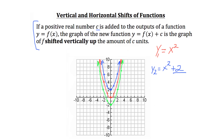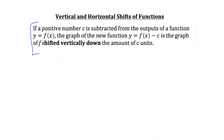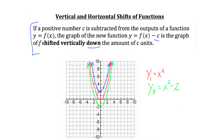Now let's take an example of shifting vertically down. If a positive number c is subtracted from the outputs of the function y equals f of x, the graph of y equals f of x minus c is the graph of f shifted vertically down by c units. We have our original graph in red, y equals x squared, and then we subtract 2. We're left with the graph shown in green — identical in shape to the red graph but shifted down two units on the y-axis.